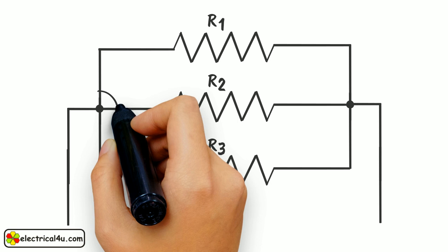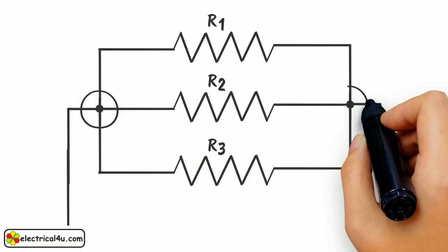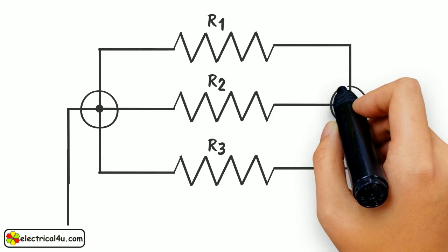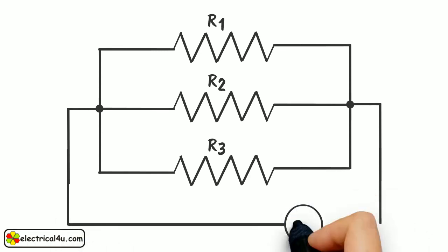Here, these terminals of R1, R2, and R3 are connected together, and these opposite terminals of them are connected together. Now, we can say these are connected in parallel. Voltage V is connected across the three resistors, R1, R2, and R3.